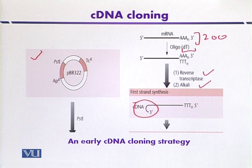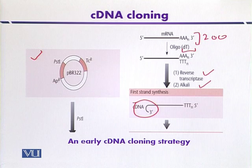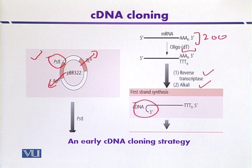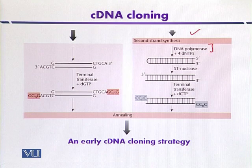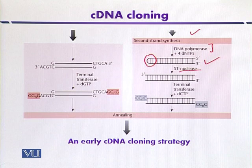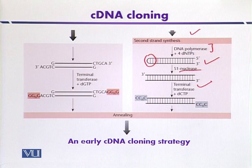On the left side of the diagram, the vector used for cDNA cloning is the well-known pBR322, which contains two selectable markers: the gene for tetracycline resistance and ampicillin resistance, and a cloning site at the PstI restriction enzyme site. Second strand biosynthesis then takes place in the presence of DNA polymerase and all four dNTPs. The hairpin loop structure at the five prime end is degraded with S1 nuclease.